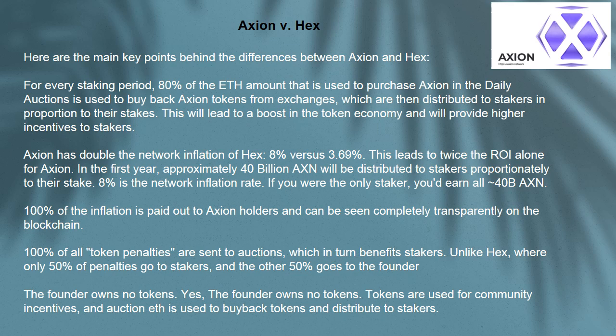This leads to twice the ROI for Axion. In the first year, approximately 40 billion AXN will be distributed to stakers proportionately to their stake. 8% is the network inflation rate. If you were the only staker, you'd earn all 40 billion AXN.